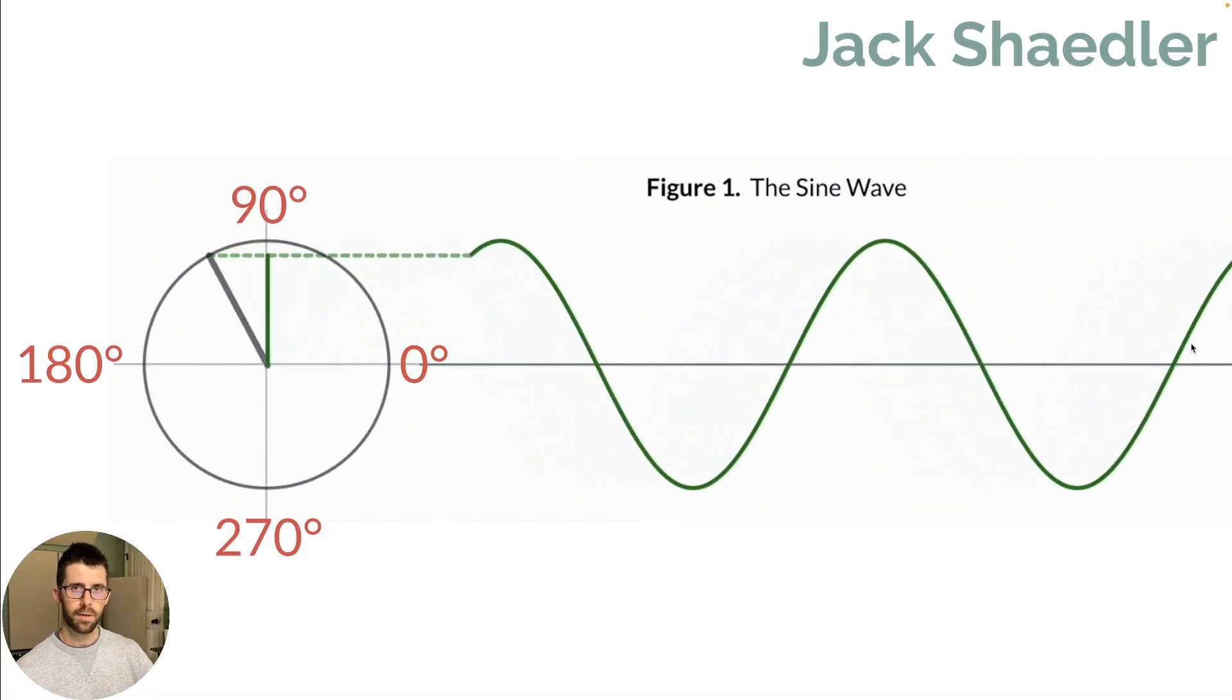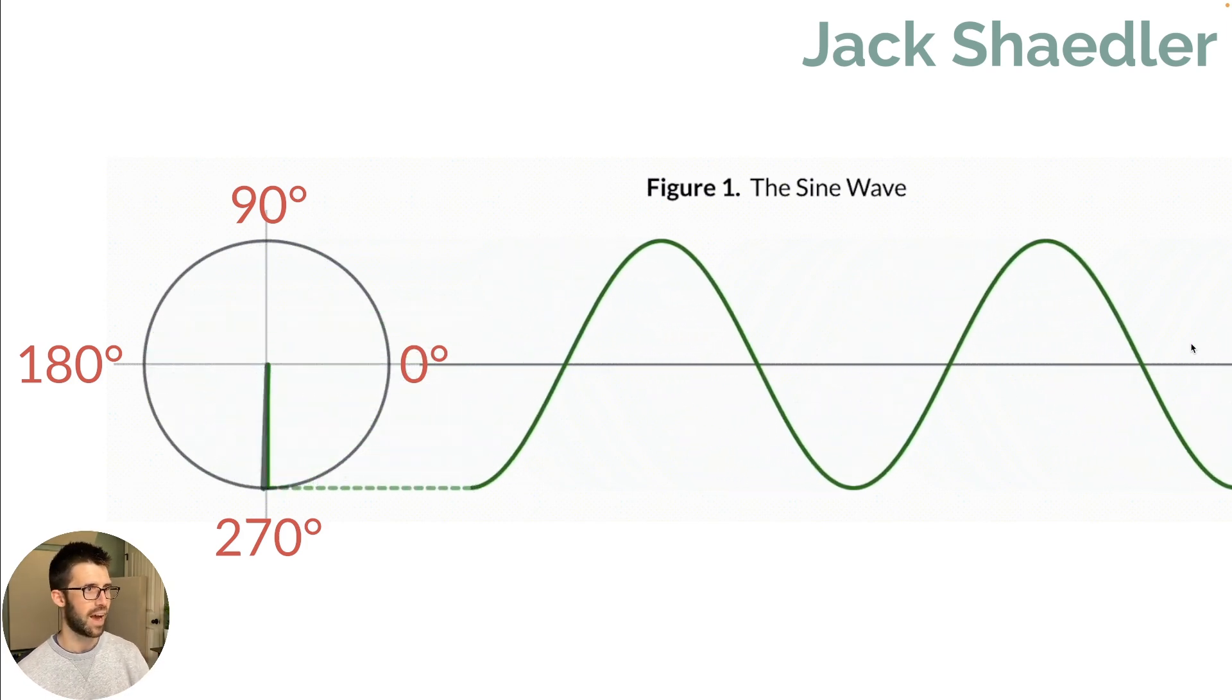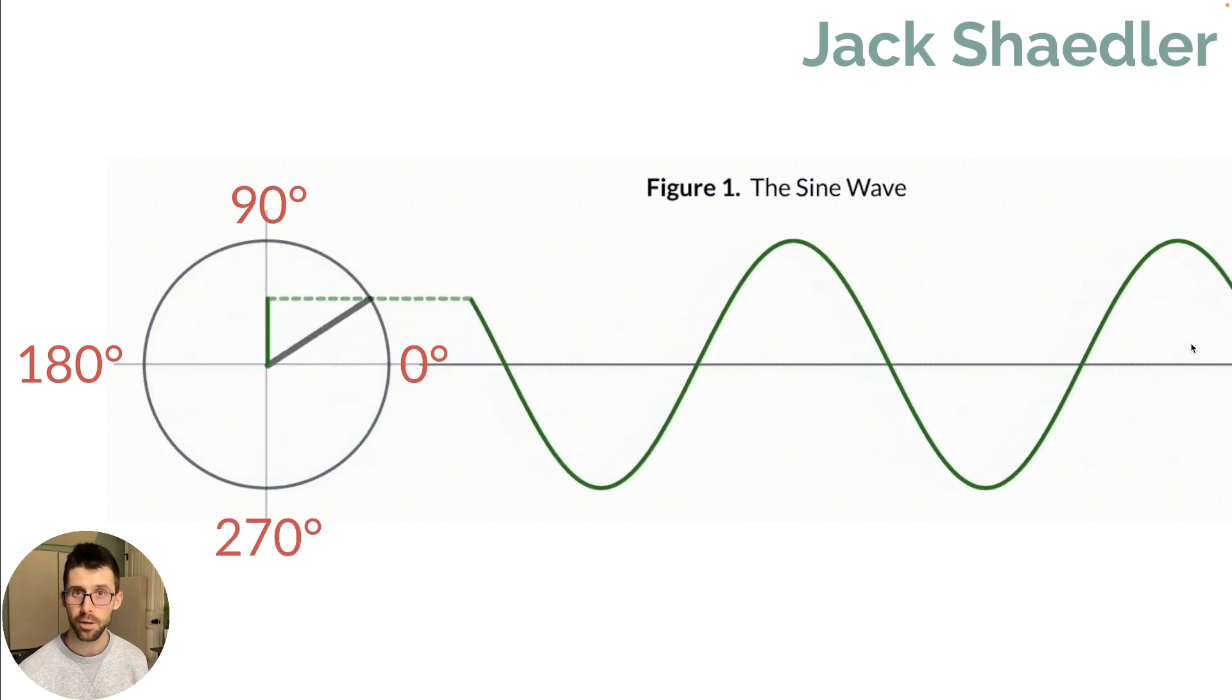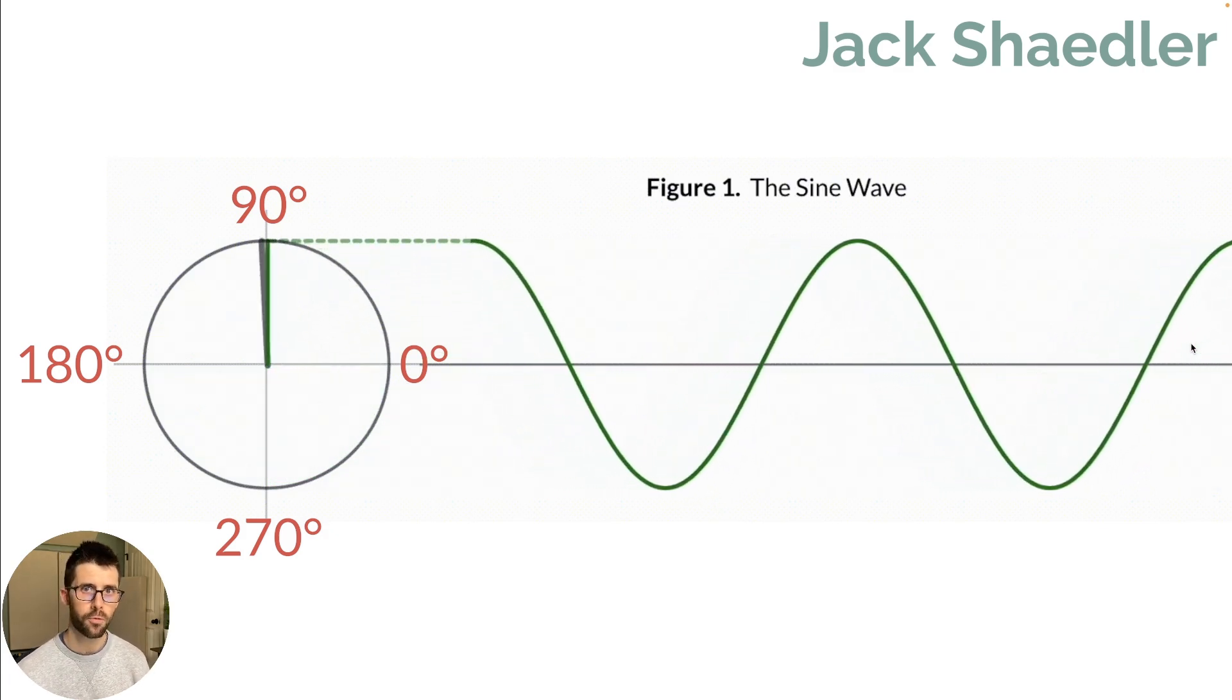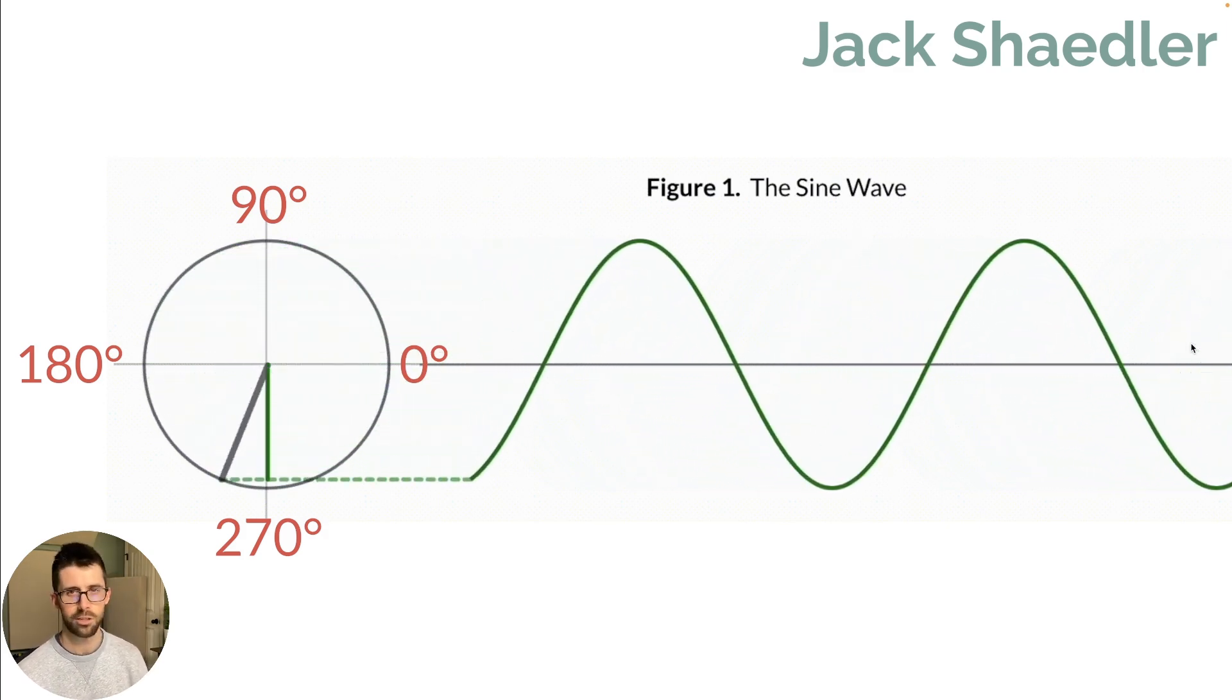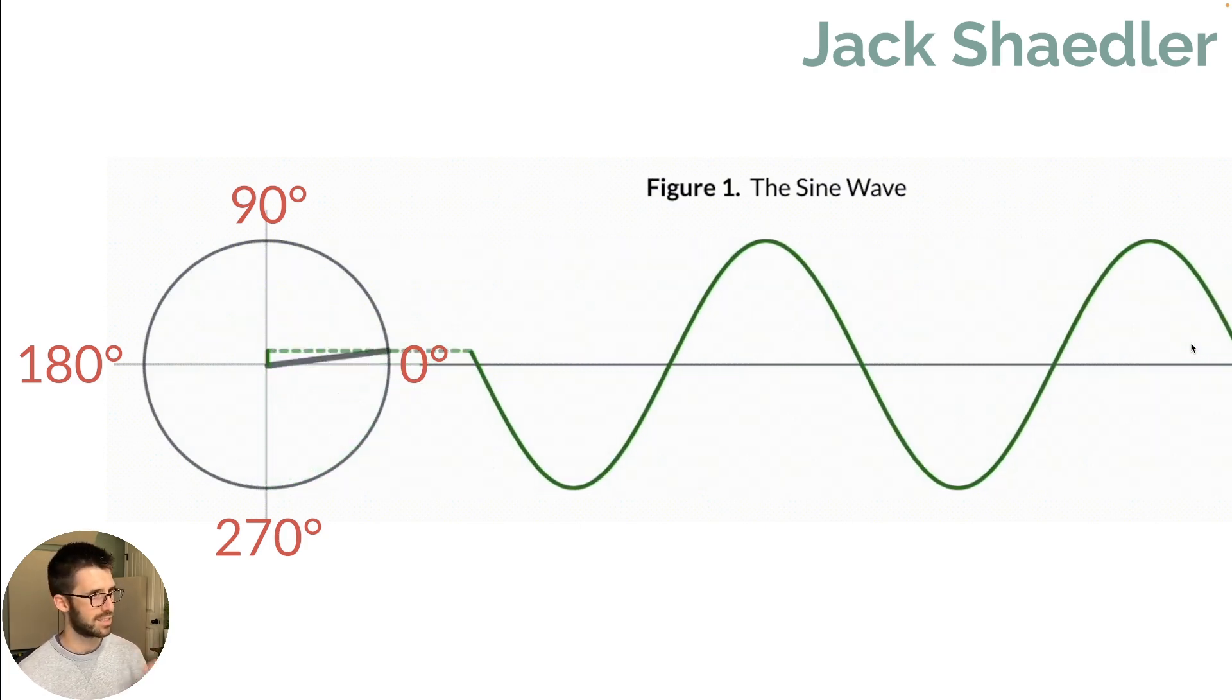So the relation of the actual waveform, which is getting drawn here on the right, to where it's at in its cycle is really cool. This is a graphic made by Jack Shadler. He has a wonderful free resource that he's made that talks about digital sampling theorem. And I stole this graphic from him. So this is really awesome. So we start here now at zero degrees. We're moving through.